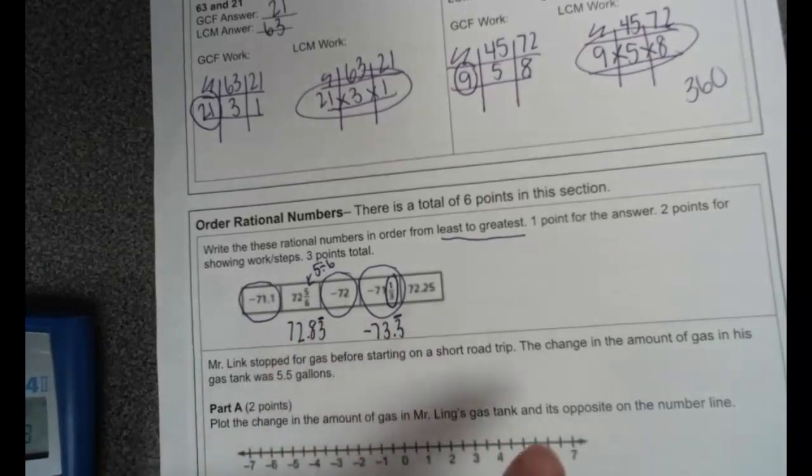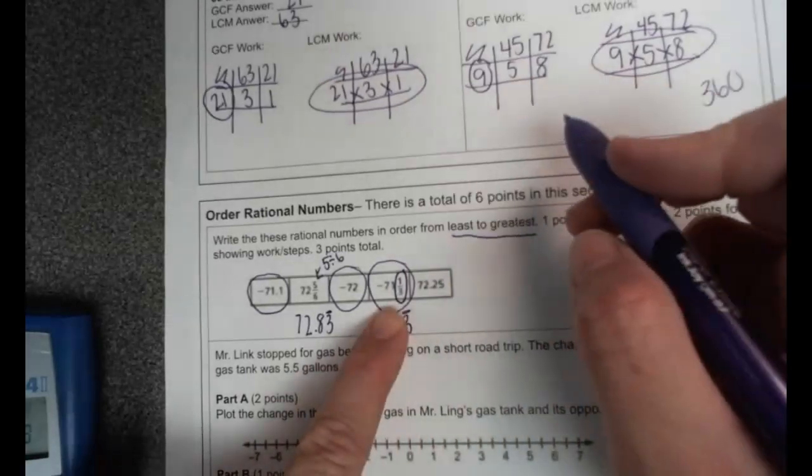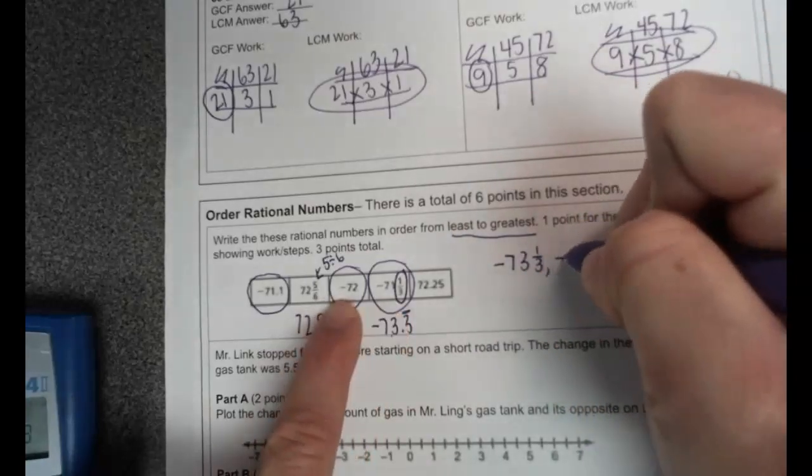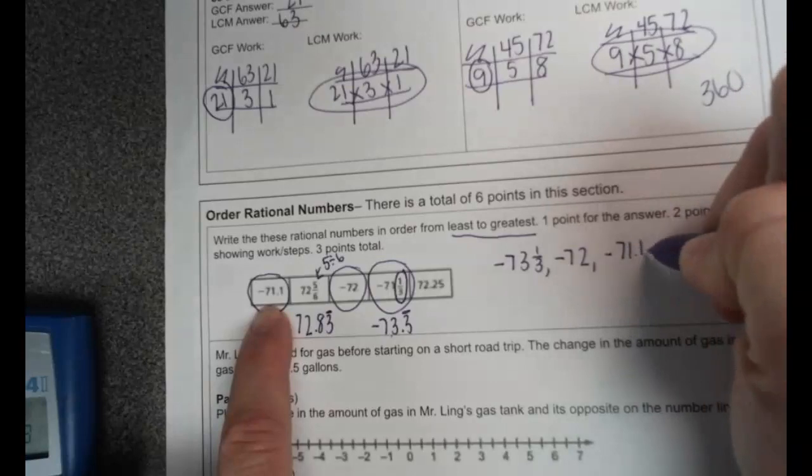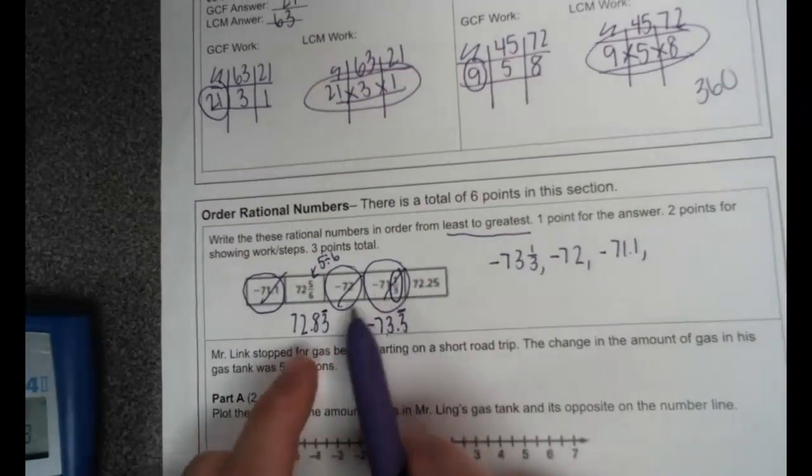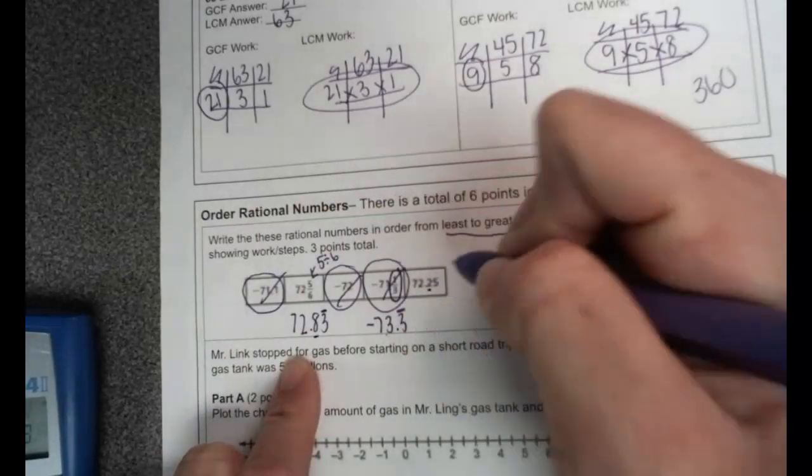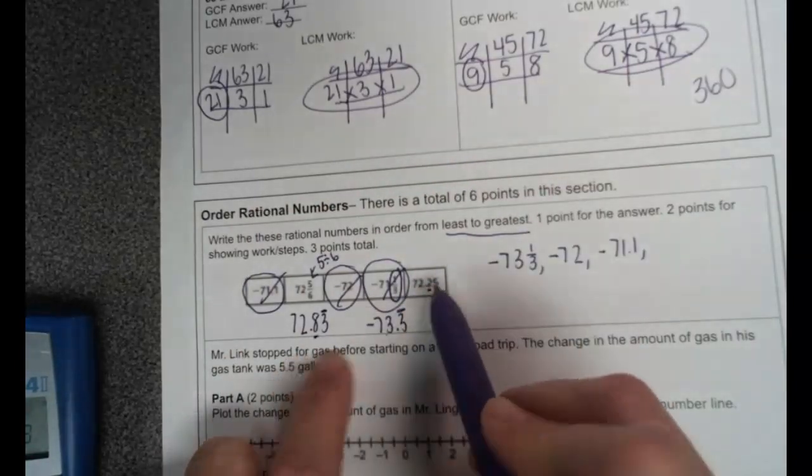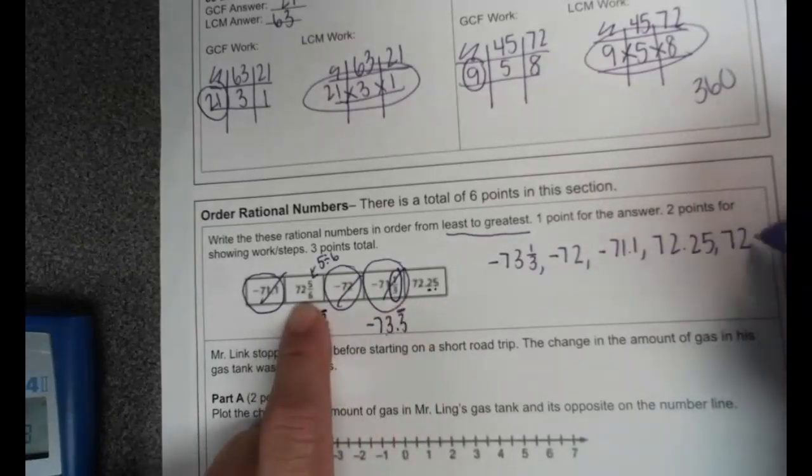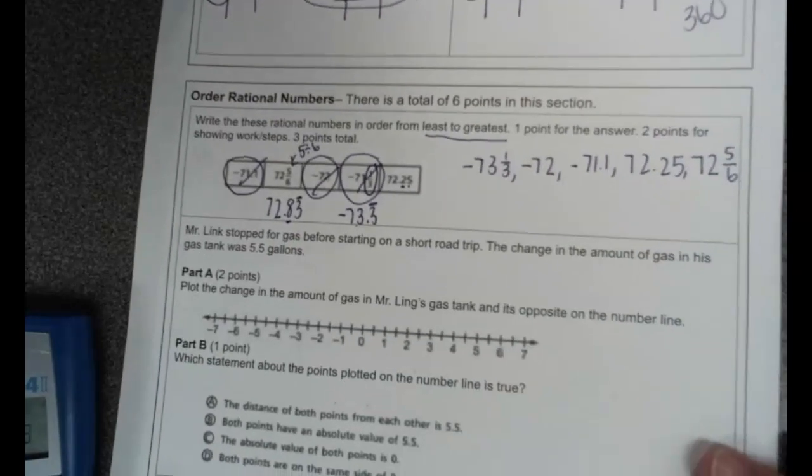Now we're doing least to greatest, so let's look at our negatives. I know that this one comes first because it's 73, so 73 and one third, then negative 72, then negative 71.1. So I have those three done. Now let's look at our decimals. This one is 72.83 repeating, this is 72.25. If I look at my tenths place, the eight is bigger than the two, so this one comes first. And we're rounding it up with the original fraction of 72 and five sixths. If you wrote it what it changed into, that's fine. I'll make sure I take a look at that.